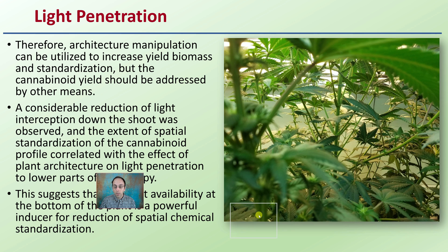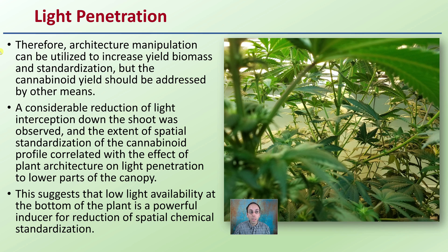Regarding light penetration: the architecture of manipulated plants can be utilized to increase yield biomass and standardization, but the cannabinoid yield should be addressed by other means. A considerable reduction of light interception down the shoot was observed, and the extent of spatial standardization of the cannabinoid profile correlated with the effect of plant architecture on light penetration to the lower parts of the canopy.